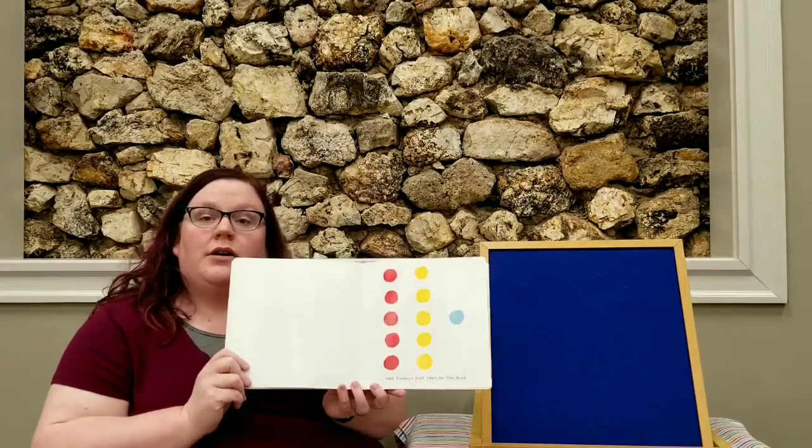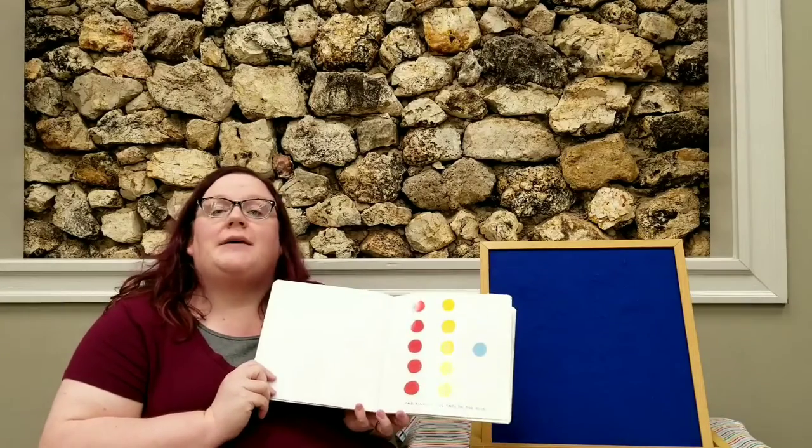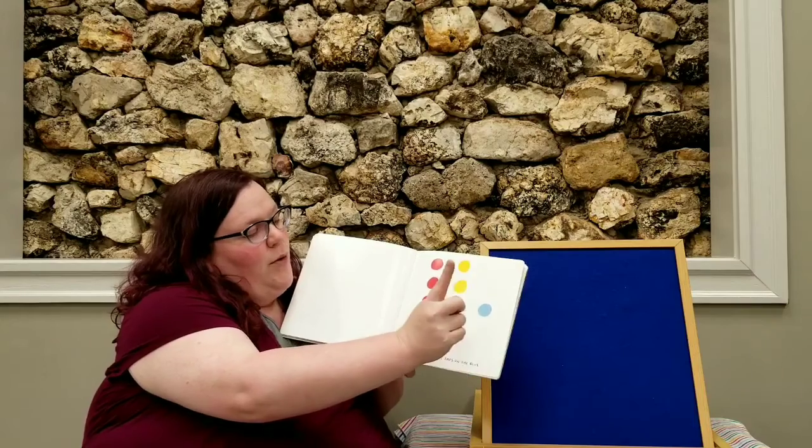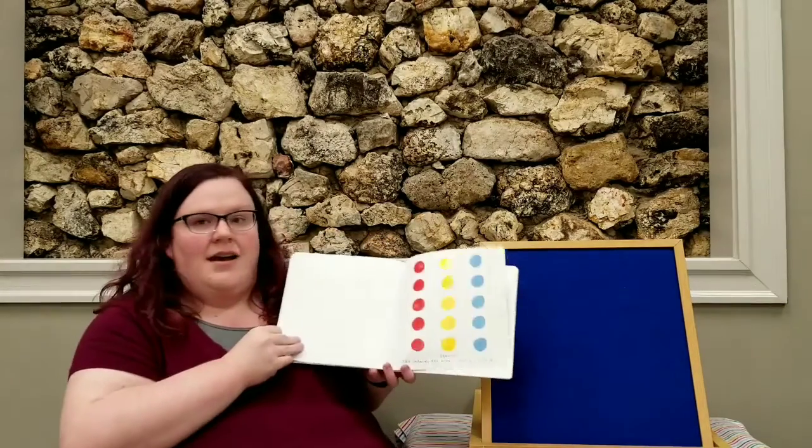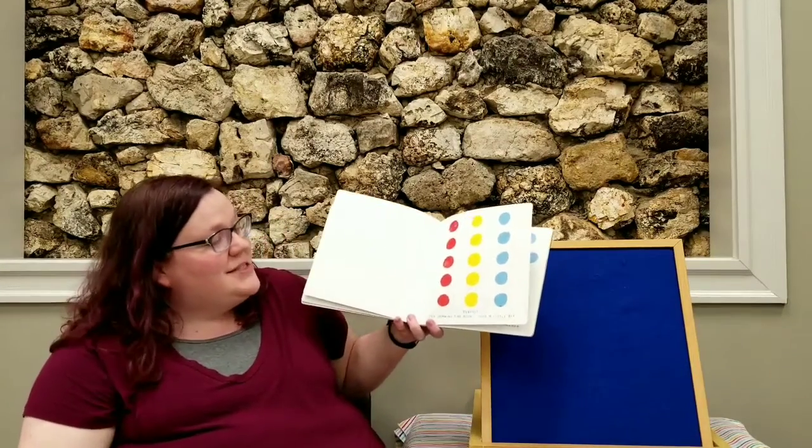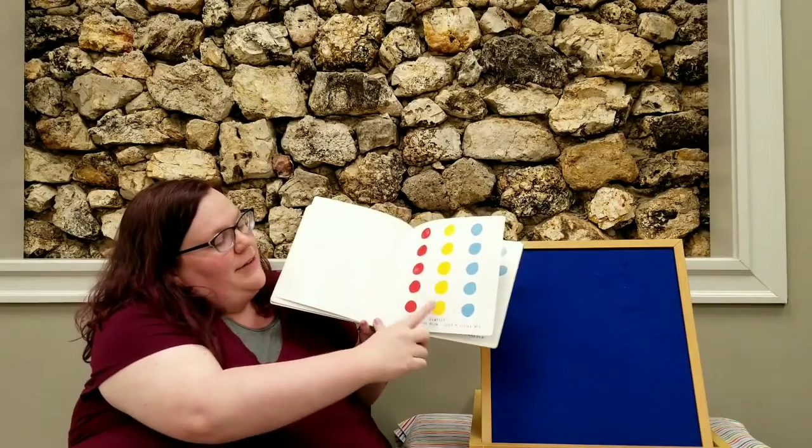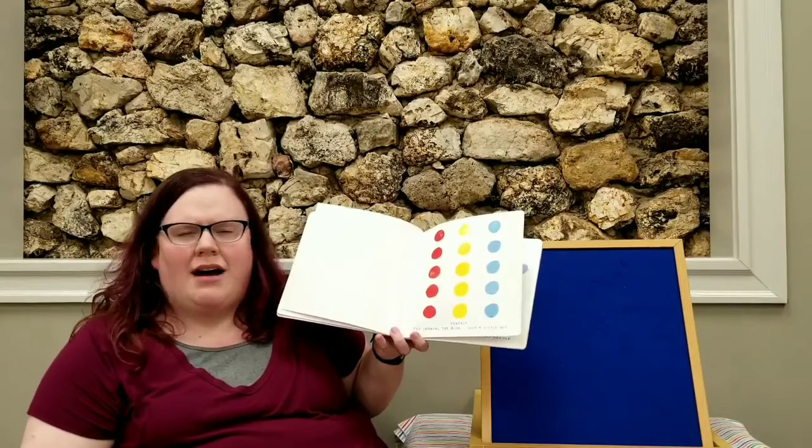And so finally we're gonna do the blue dot as well. Five times tapping. Ready? Here we go! One, two, three, four, five. Look at all of those dots! Those are perfect! So we have five red dots and five yellow dots and five blue dots. Great job!